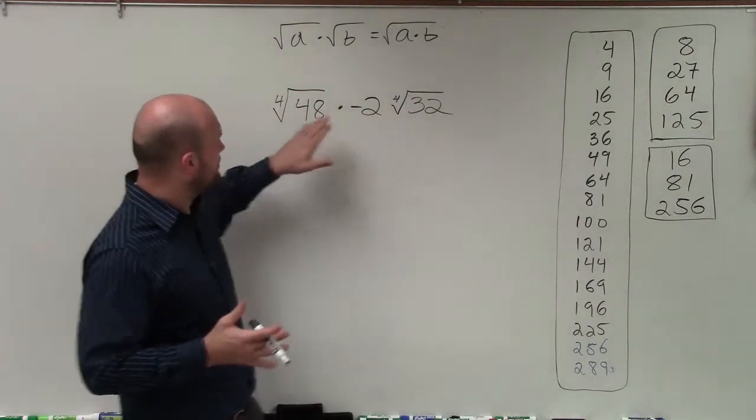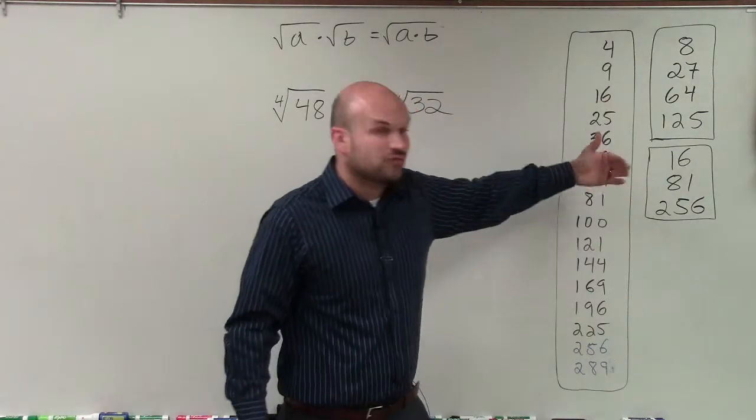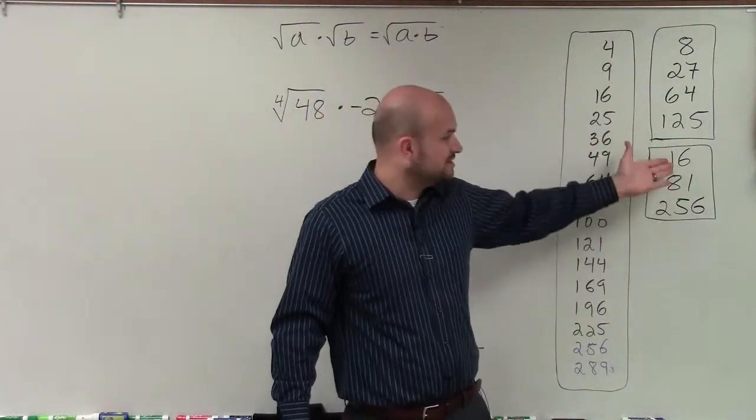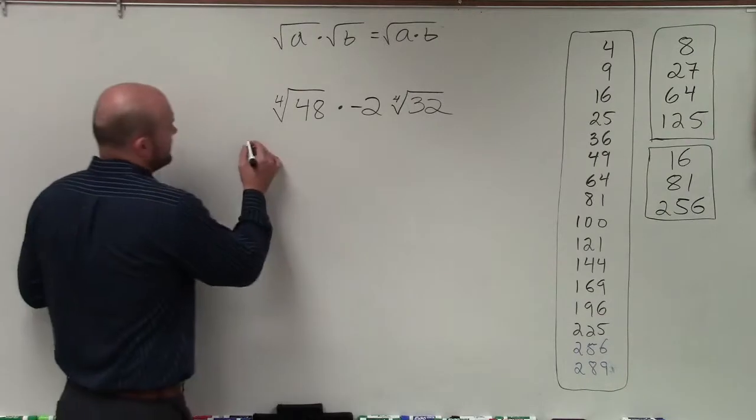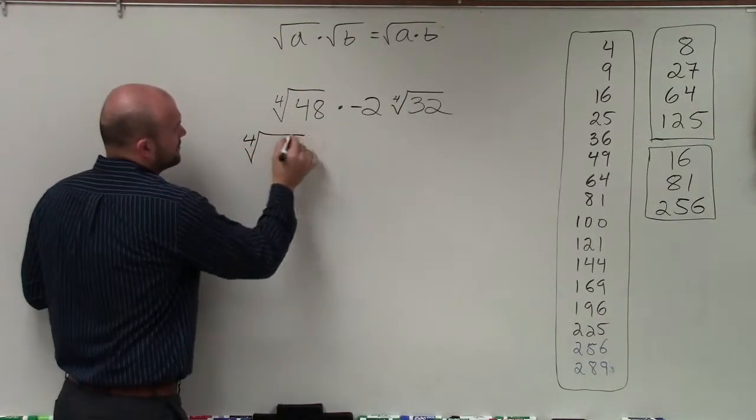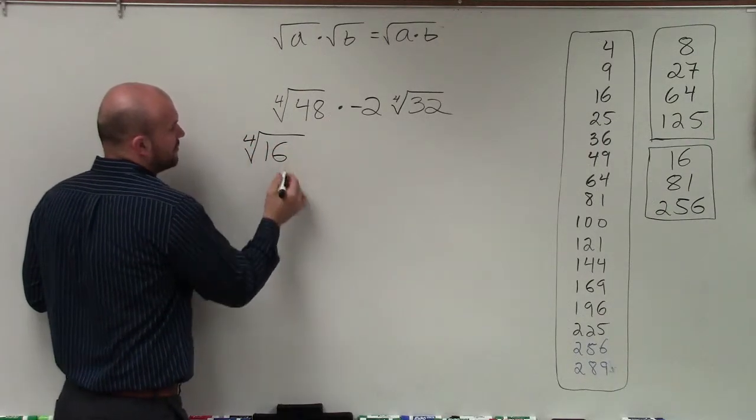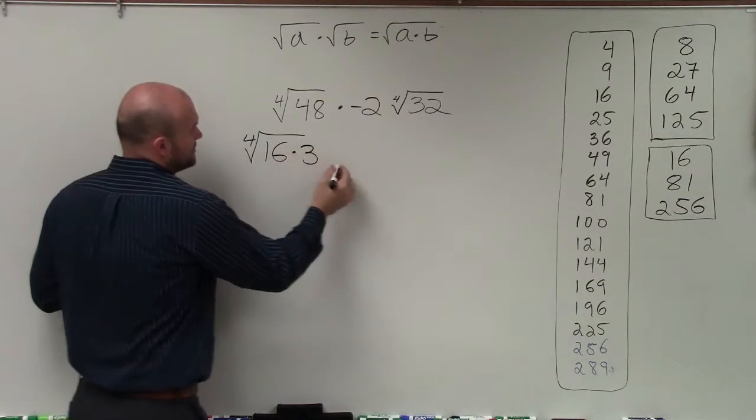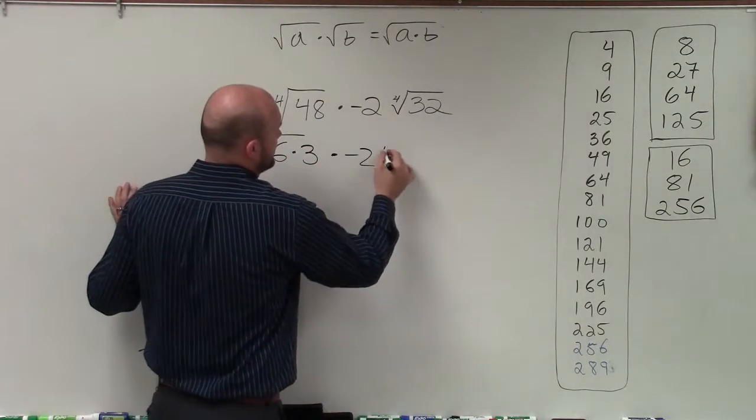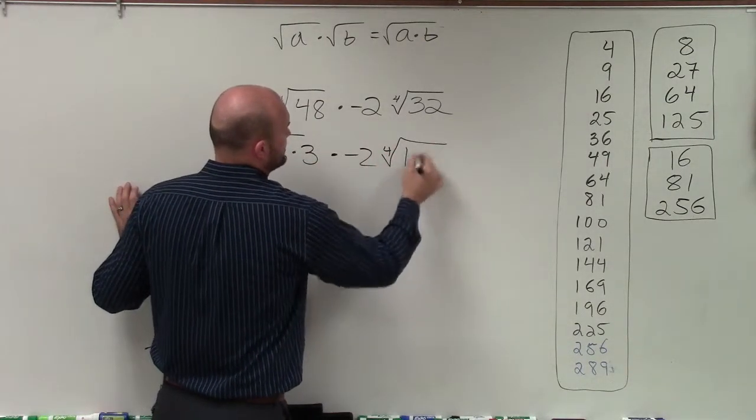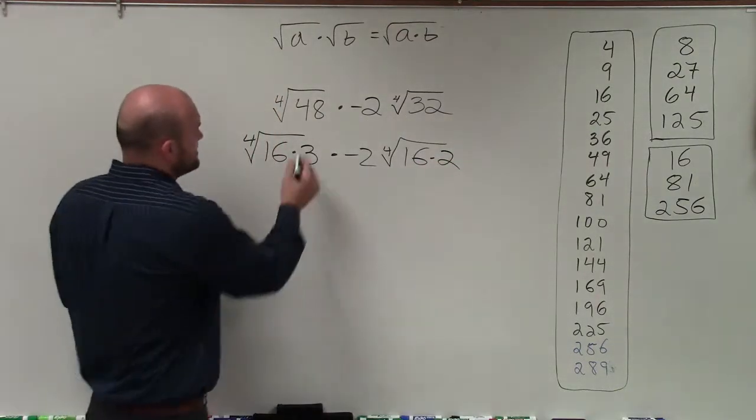So can I rewrite 48 as a product of one of these fourth root numbers? And you can see, obviously yes, I can rewrite it as the fourth root of 16. So therefore, I can say the fourth root of 48 I can rewrite as the fourth root of 16 times 3 times negative 2 times the fourth root of 32 as 16 times 2.